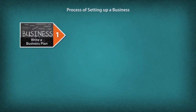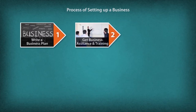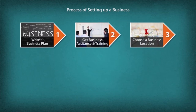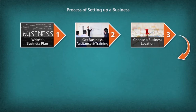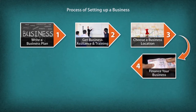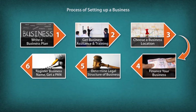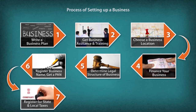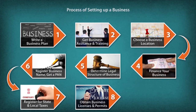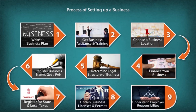The process of setting up a business includes: writing a business plan, getting business assistance and training, choosing a business location, financing your business, determining the legal structure of your business, registering a business name and getting a permanent account number (PAN), registering for state and local taxes, obtaining business licenses and permits, and understanding employer responsibilities.